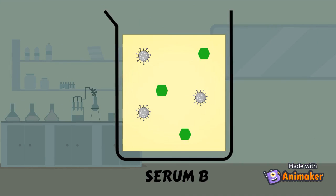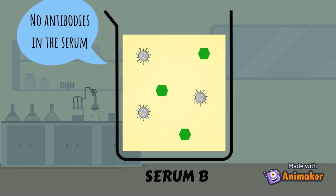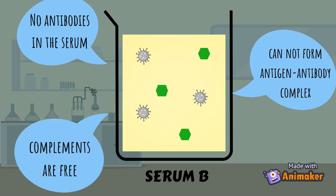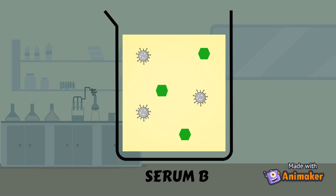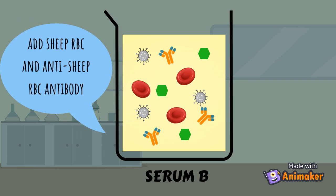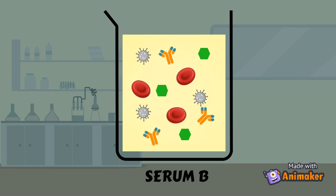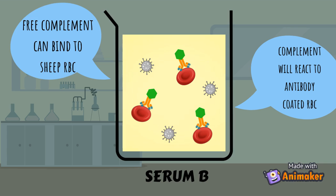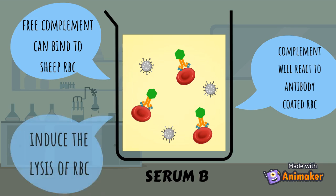Next, let's take a look at serum B. In serum B, there is no presence of antibodies. So the antigen-antibody complex cannot be formed, as the antigen cannot find antibodies to bind. In other words, the complement is not bound to anything and can roam freely inside the serum. Sheep red blood cells and anti-sheep red blood cell antibody are also added into serum B. As the complements are free, they bind to the sheep red blood cells and react with the antibodies coating the red blood cells.